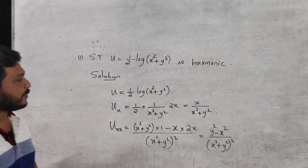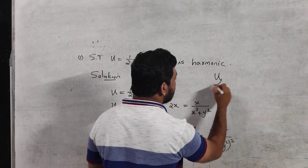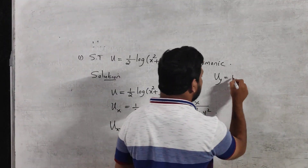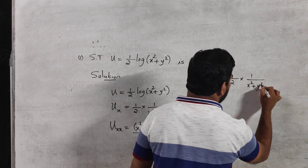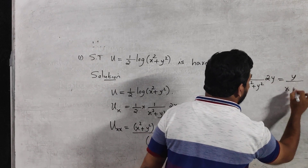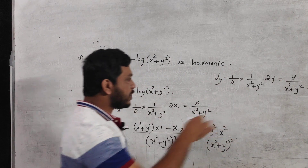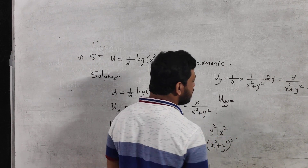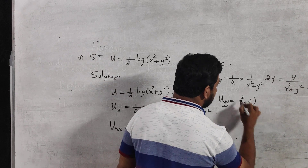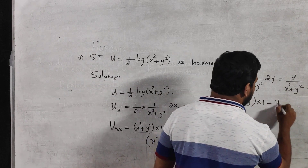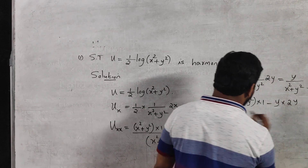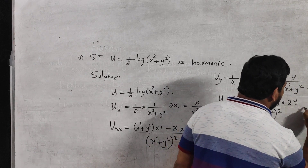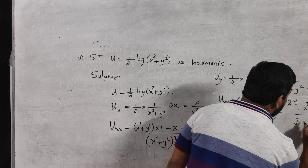In the same manner, we compute uy and uyy. Differentiating u partially with respect to y treating x as constant: uy = ½ × (1/(x²+y²)) × 2y = y / (x² + y²). Differentiating once more with respect to y using the quotient rule gives uyy = (x² − y²) / (x² + y²)².